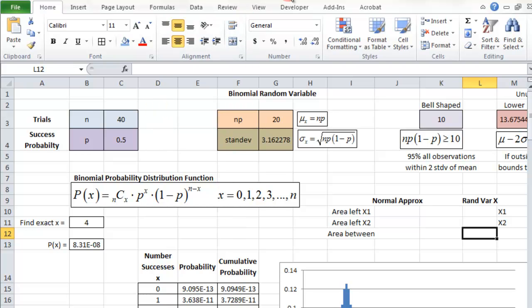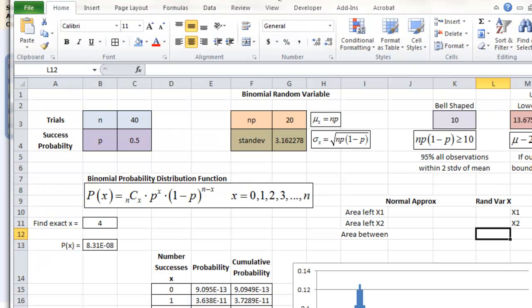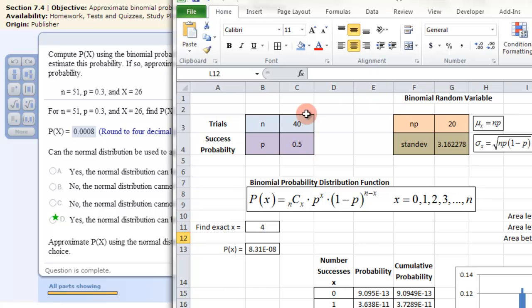The first question says for n=51, probability 0.3, and X=26, find the probability of X number of successes. Let's get that information in here. I have my value here for n, so that would be 51. I have my success probability as 0.3, and then the exact of 26 I can put right here.